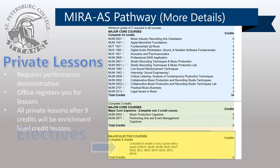Those wanting to take private lessons for music major level credit must be accepted into those courses via a performance demonstration. Those not accepted into music major level credit may participate in private instrument or voice lessons for enrichment level credit. When students meet their nine credits of MIRA electives, any further enrollment choices of private lessons will be at enrichment level credit.